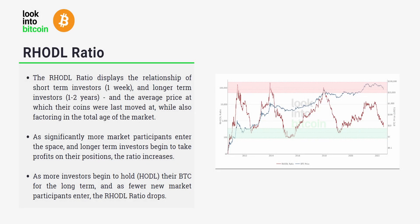To summarize: the RHODL ratio displays the relationship of short-term investors who haven't moved their BTC in just a one-week period compared to longer-term investors who haven't moved their BTC for a one-to-two year period. This ratio also factors in the total age of the market — as Bitcoin exists for longer, more people are holding for longer periods — giving a more standardized and true value for the RHODL ratio.